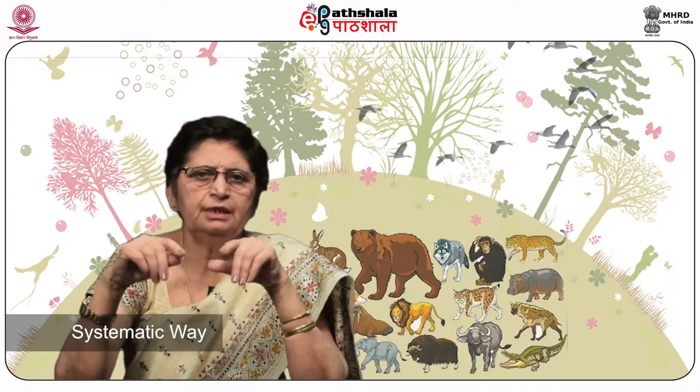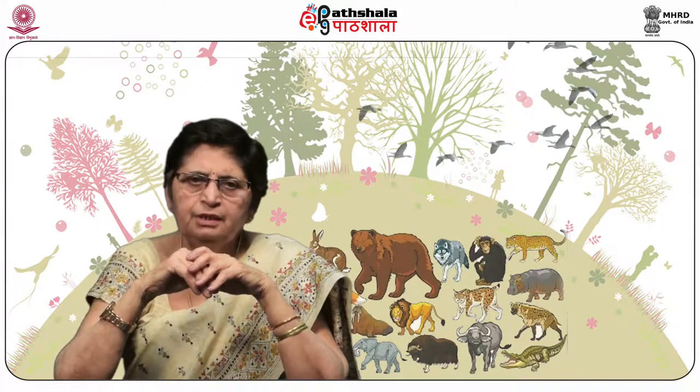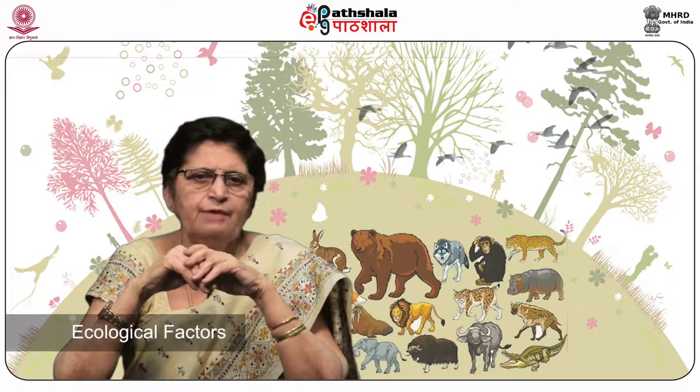In 1938, Verhulst proposed that populations grow in a more systematic way than proposed by Malthus. The geometric or exponential growth of populations is eventually curtailed by food availability, competition for resources, predation, diseases, and other ecological factors, resulting in population crashes. In nature, however, populations are sustained for a long time, and there is a balance in the ecosystem as populations tend to grow in the logistic manner. All populations tend to be stable in ecosystems.